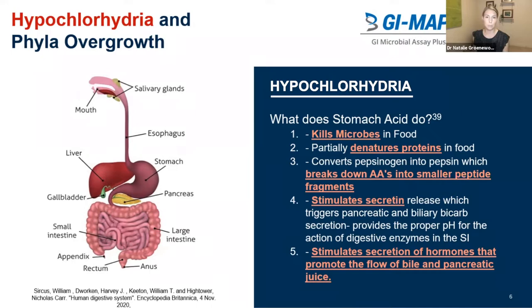To understand the effects of hypochlorhydria, we really need to understand the physiological functions of HCL and what it's responsible for in our digestive tract. First of all, it's going to kill any microbes coming into our digestive tract on the food that we're eating — almost as a guardian of our stomach. It partially denatures proteins in food and starts to break them down. It converts pepsinogen into pepsin and that's going to break down our amino acids into smaller peptide fragments, which is going to be essential for neurotransmitter production, thyroid hormone production, energy, skin, hair, nails, etc.